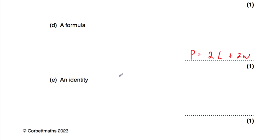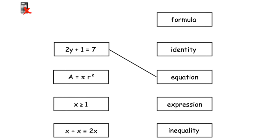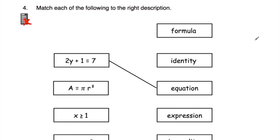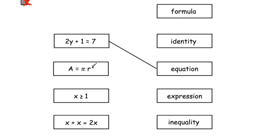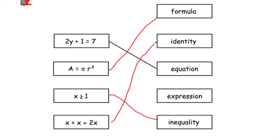For part e, we've been asked to write down an identity — something that's always equal to something. I'm going to write 4x plus x is equivalent to 5x, because 4x plus x is always equal to 5x. Question number 4: match each to the right description. 2y plus 1 equals 7 is an equation. Area equals pi r squared is a formula, linking radius to area. x is greater than or equal to 1 is an inequality. And x plus x is equivalent to 2x is an identity.